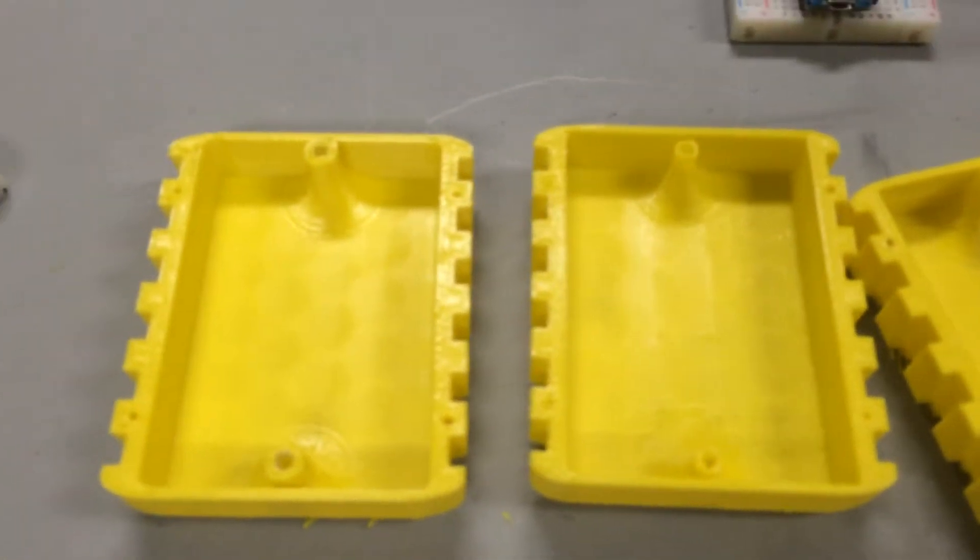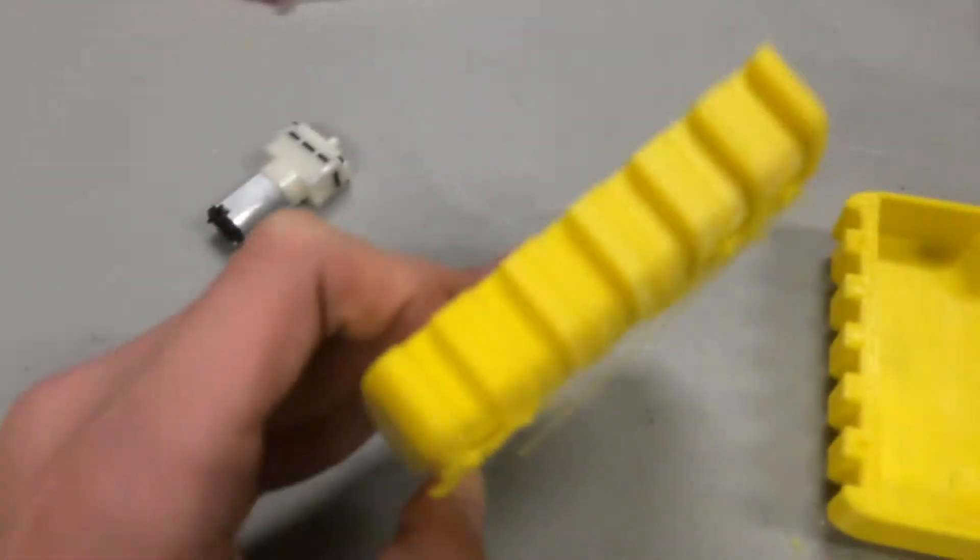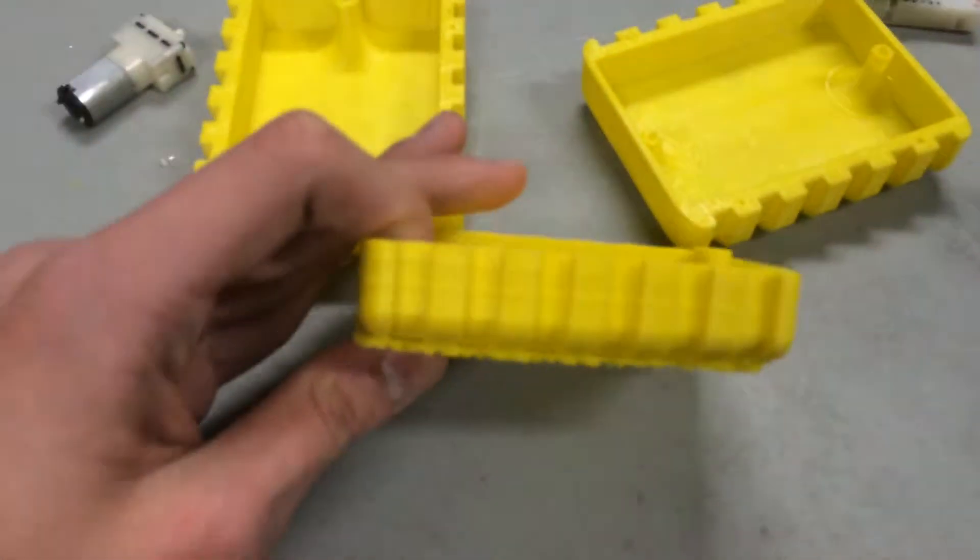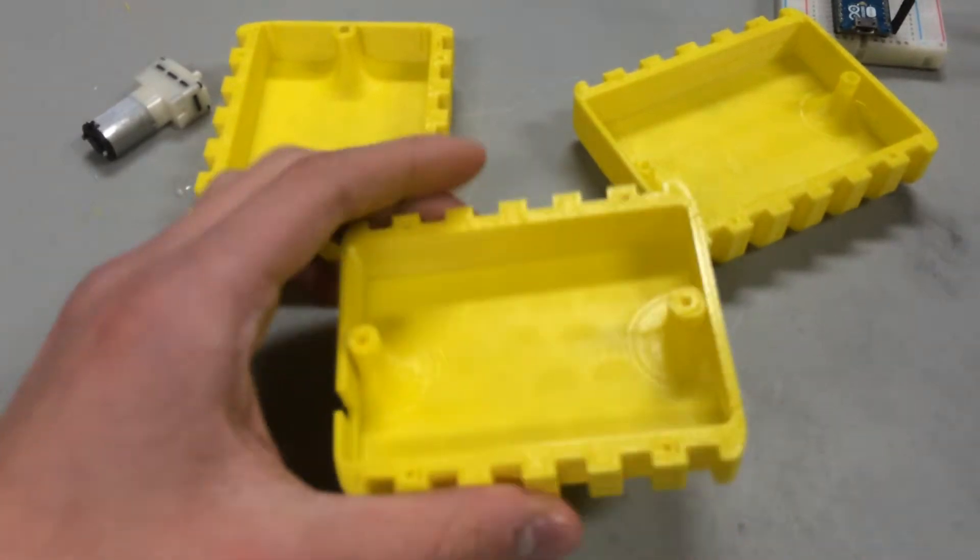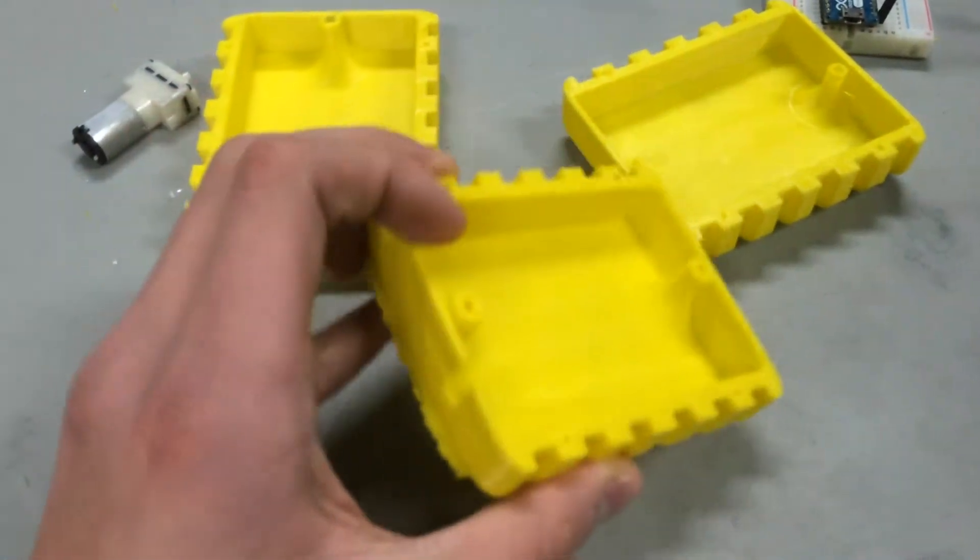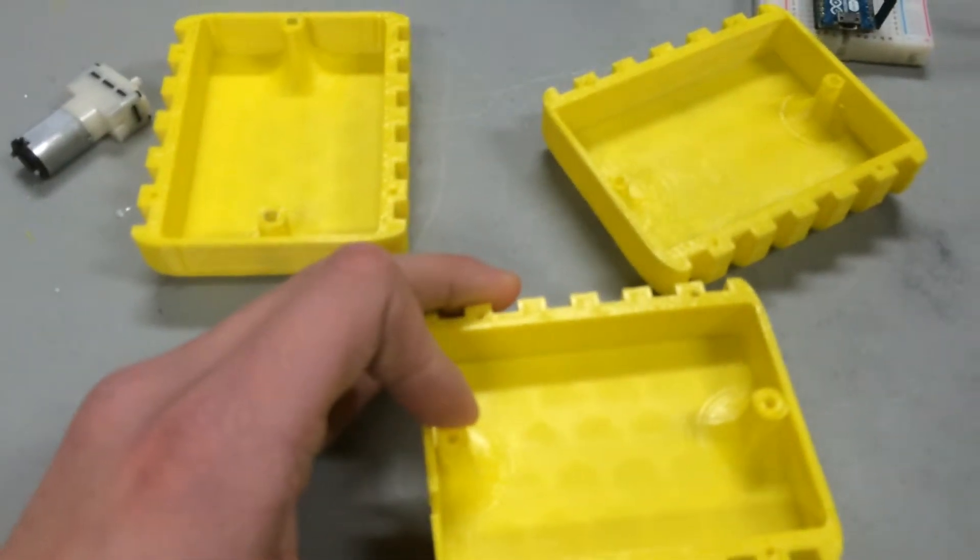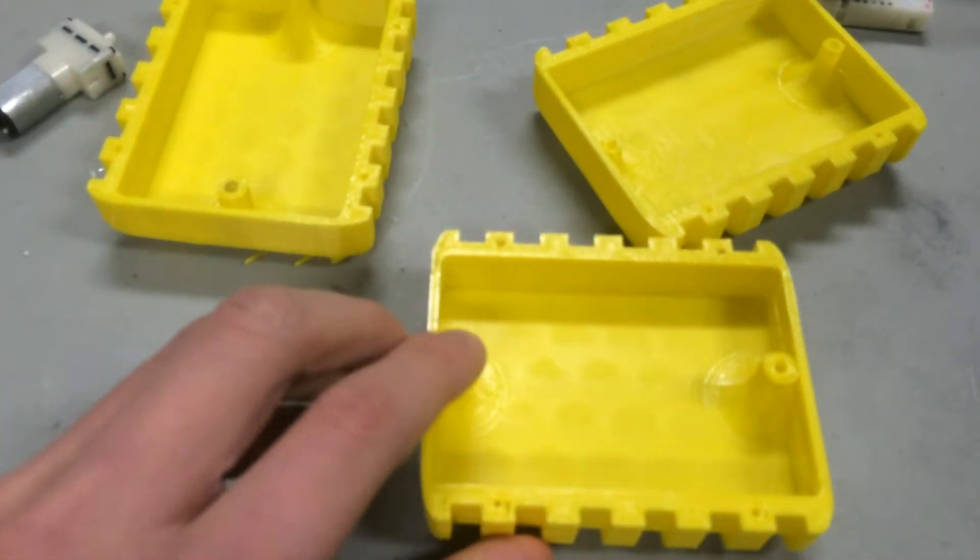So these are the bottom halves of enclosures and this is the newest version. It has everything I need and it fits nicely. I like self-tapping screws that hold a little perf board here in place.